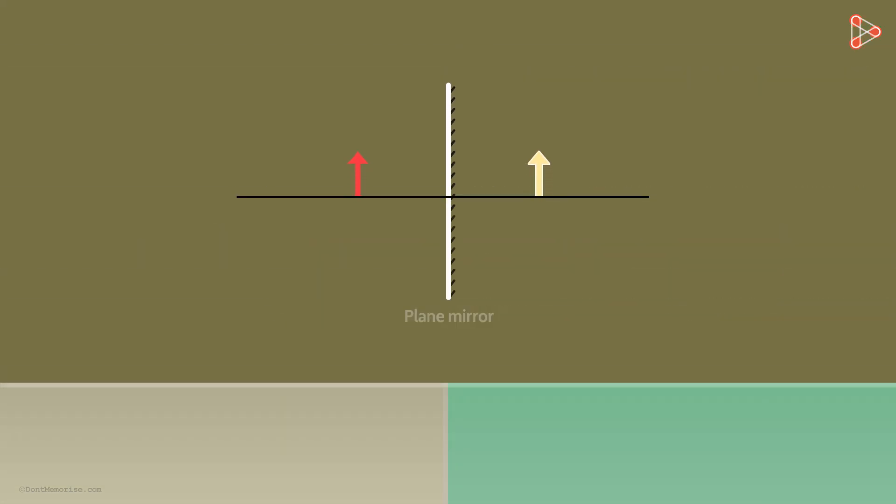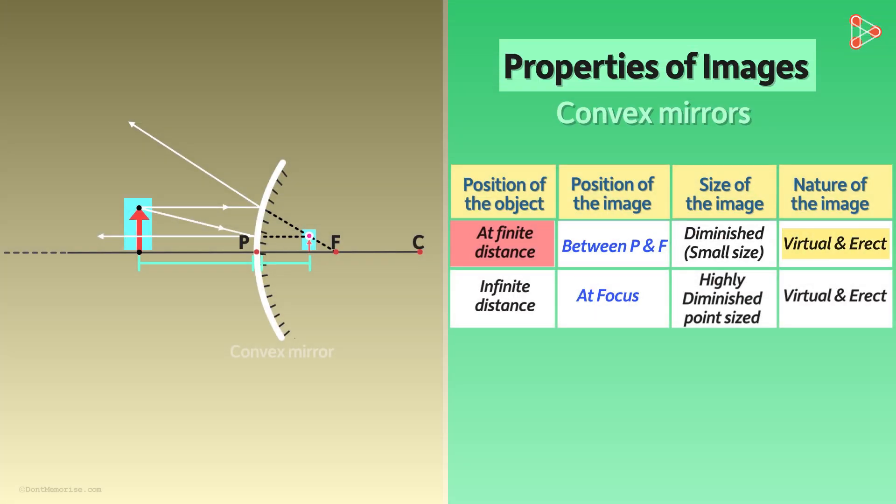If you remember, when we were discussing plain mirror images, the virtual image distance and object distance from the mirror were the same irrespective of where the object was placed. Here, even though it's a virtual image, it does not follow that property.